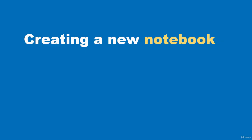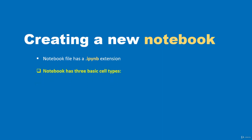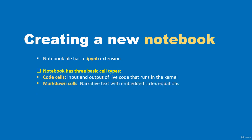In this video we are going to be creating a new notebook. A notebook has the file extension .ipynb. A notebook consists of three basic types of cells: code cells (which include live code input/output that runs in the kernel), markdown cells (narrative text with embedded LaTeX equations), and raw cells (unformatted text). Notebooks can also be exported to static formats like HTML and PDF.